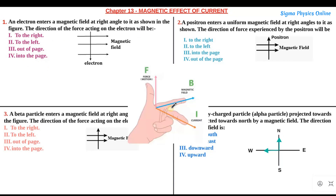Fleming's left hand rule states that if we stretch the forefinger, the middle finger, and the thumb of our left hand such that they are mutually perpendicular to each other, then if the forefinger represents the direction of magnetic field and the middle finger represents the direction of current, then the direction in which the force will act is represented by the direction of the thumb.